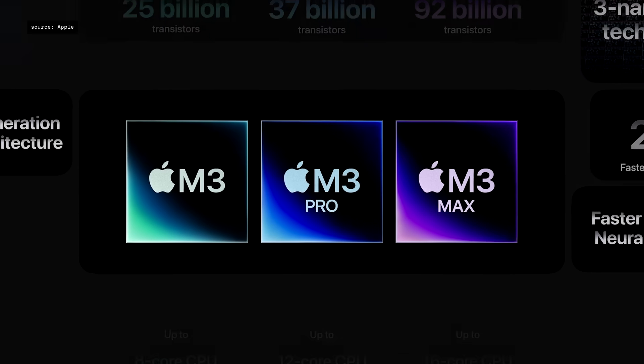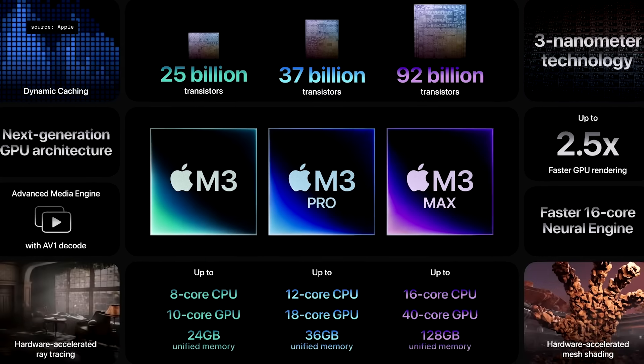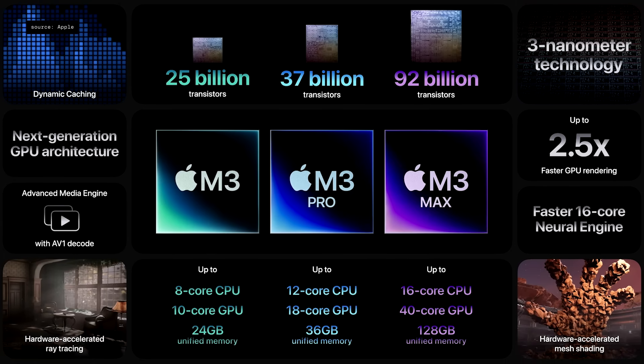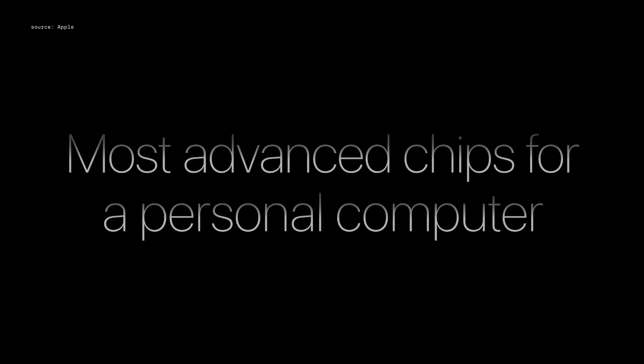So that's the groundbreaking M3, M3 Pro, and M3 Max. With 3-nanometer technology, a next-generation GPU architecture, a higher performance CPU, faster neural engine, and support for even more unified memory, they're the most advanced chips ever built for a personal computer.